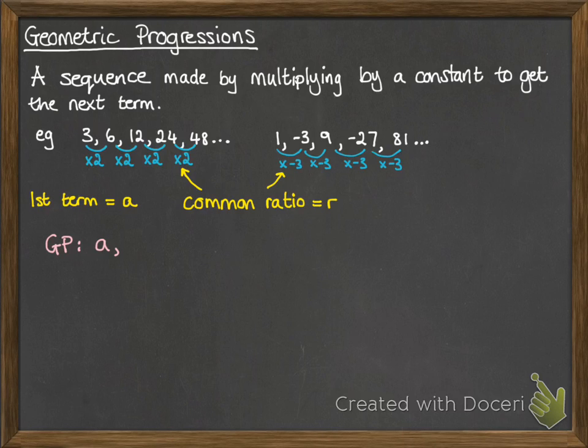Then our GP looks like this, where our first term is a. You get the second term by multiplying the first term by the ratio, so that's ar. You'd get the third term by multiplying the second term by the ratio, so ar times r gives us ar squared. And then the next one you times by r again, so you get ar cubed, and so on, all the way up to ar to the n minus 1 for the nth term.